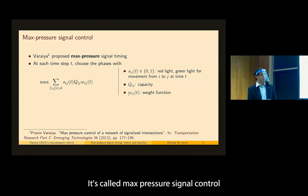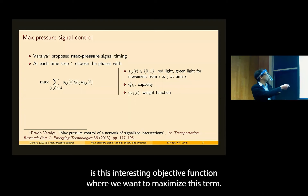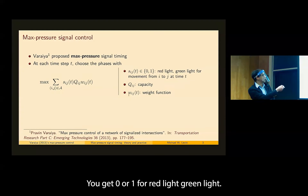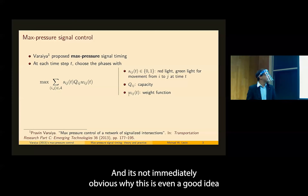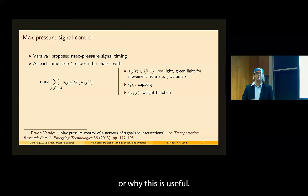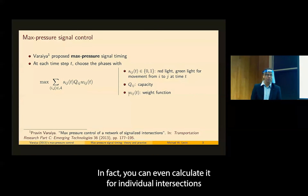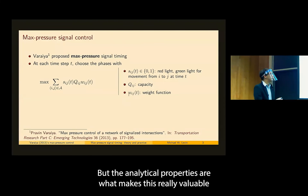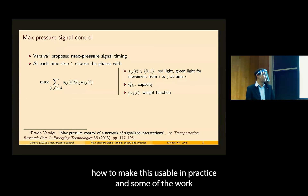It's called max pressure signal control, or sometimes back pressure. It comes down to this interesting objective function where we want to maximize a term. Sij is a signal timing — zero or one for red or green light. Q is capacity. Wij is a weight function. It's not immediately obvious why this is a good idea, but this control is very simple to calculate. We can even calculate it at individual intersections separately without any coordination. The analytical properties are what make this really valuable.